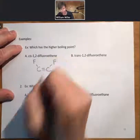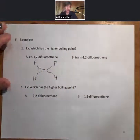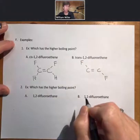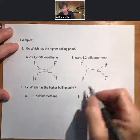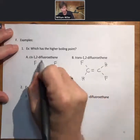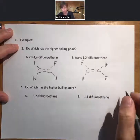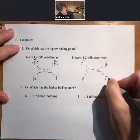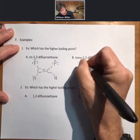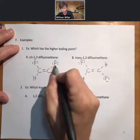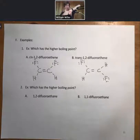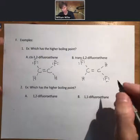'Trans' means the two fluorines are on opposite sides. We should draw in the lone pairs for the two fluorines. Double bonds are rigid — when a double bond is rigid it means the shape is locked into place. So if the two fluorines are on the same side, they will always be on the same side; if on opposite sides, they will always be on opposite sides. These are rigid molecules.